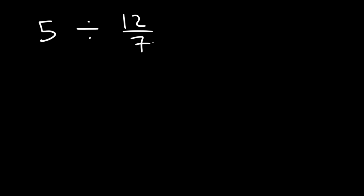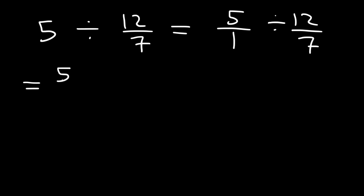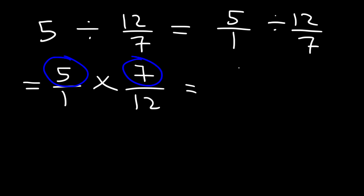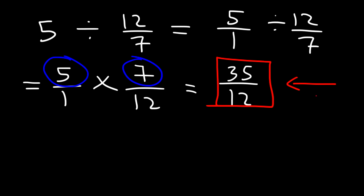Now what if we have a whole number divided by a fraction? We do the same thing — rewrite the whole number as a fraction. 5 is the same as 5 over 1. Keep the first fraction the same, change division to multiplication, and flip the second fraction. 5 times 7 is 35, and 1 times 12 is 12, so the answer is 35 over 12. Sometimes you may need to convert an improper fraction into a mixed number — that's covered in the next video linked in the description. Thanks for watching.